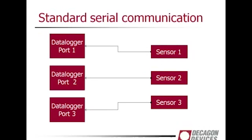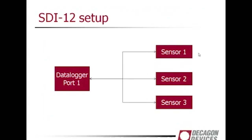Here's a schematic of what that looks like. In the first mode of communication, and in many serial communication schemes, the sensor is just sending data to your data logger — you have one sensor on each data logger port, so for three sensors you'll need three different data logger ports. SDI-12 lets you put all three of those sensors onto one data logger port, and it's a two-way communication scheme. Sometimes this means you have to use a different port on a data logger.